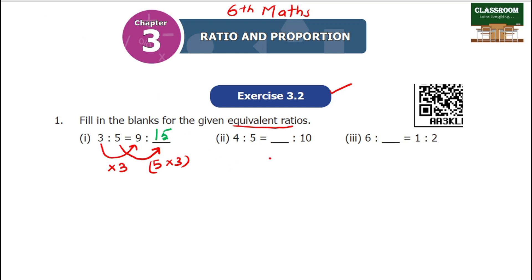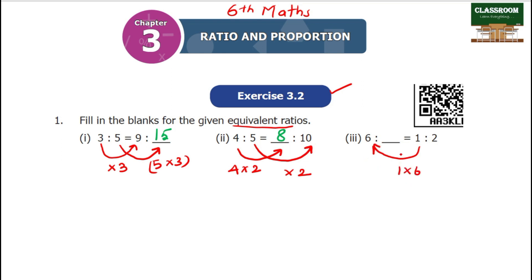Next: 5, 2, 1, and 10, 2. So 4 into 2 is 8. The answer is 8. Next: 1 is to 6. So 1 into 6, 2 into 6 — the answer is 12.